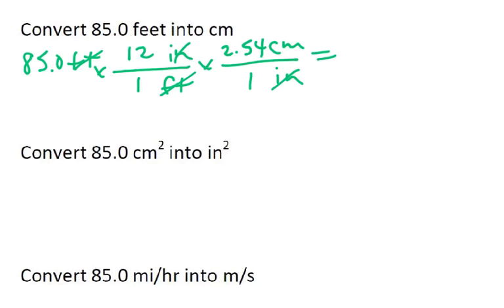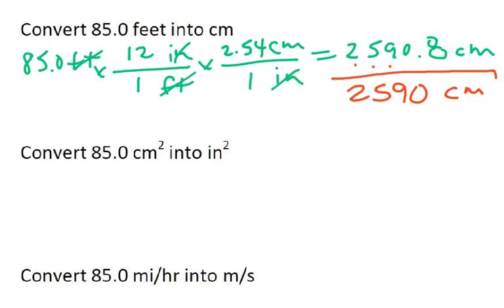I'm getting 2590.8 by multiplying the top numbers and dividing by 1, dividing by 1. The unit for that answer is centimeters. If I want three significant figures, I want this number, this number, this number. I can't just write 259 because that's not the same as 2,590. So I'm going to put in a zero to hold the place. And that will be my answer.